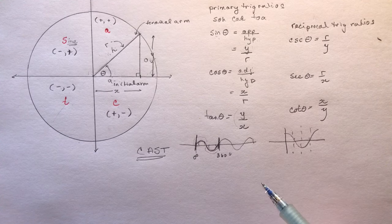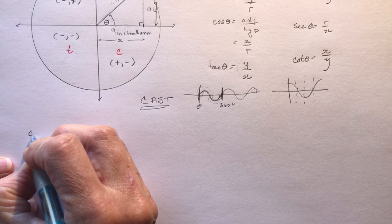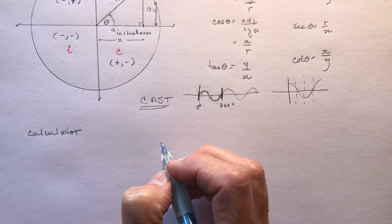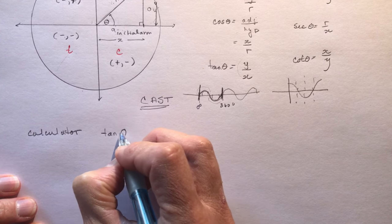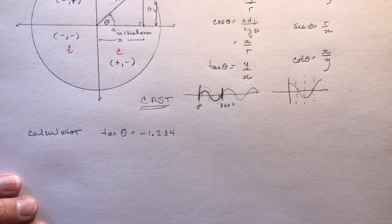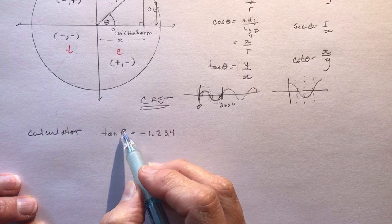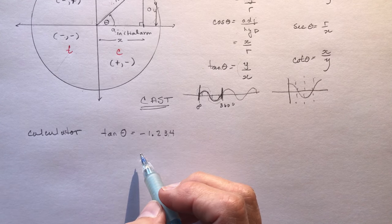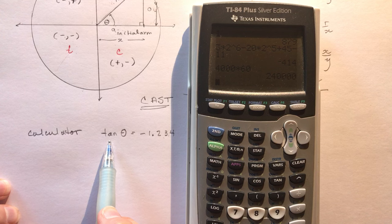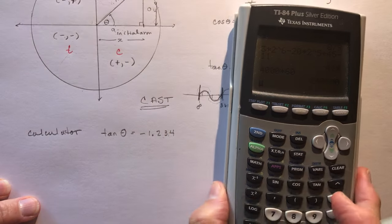Now let's talk about using your calculator for trigonometry — finding values. Back in the day when I went to school we didn't have calculators; we had trigonometric tables and had to look up the ratio of sides to find the angle from a chart. Basically, that's what's going on inside your calculator. If the ratio of the opposite to the adjacent is -1.234, what is the value of theta?